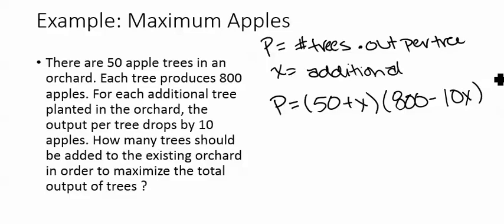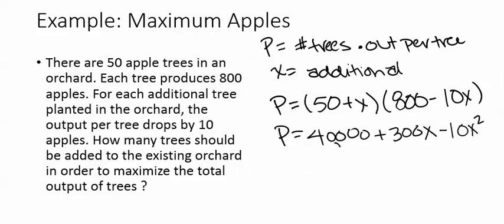Remember, in order to maximize this, we're going to have to take the derivative. I think instead of using the product rule, I would FOIL this and write this out as a quadratic first. So using FOIL or algebra to expand this, I end up with 40,000 plus 300x minus 10x squared.